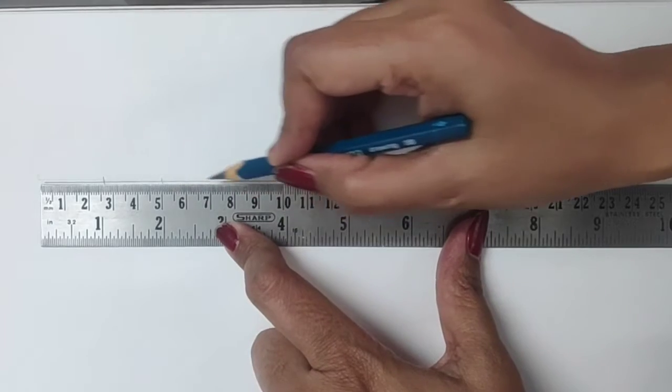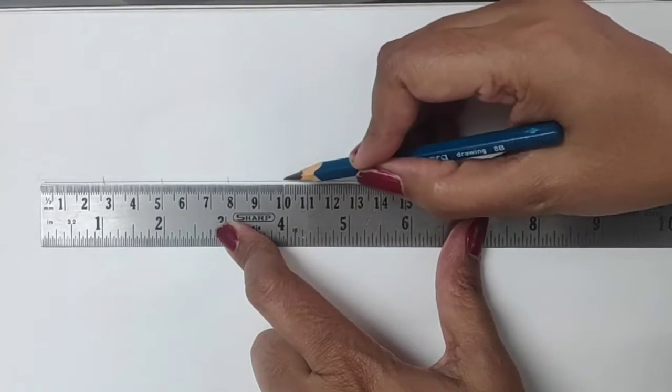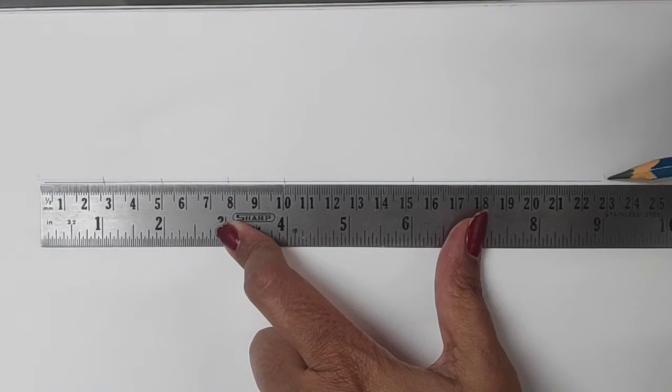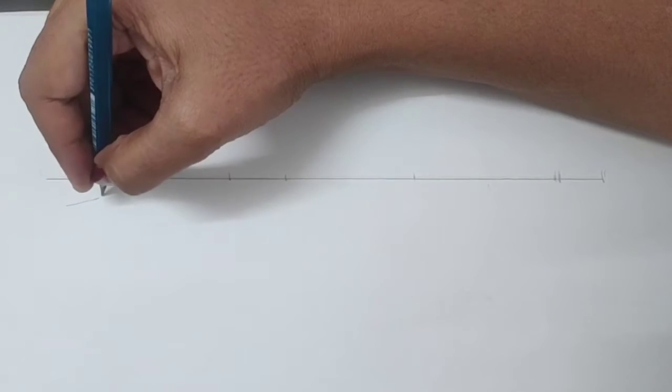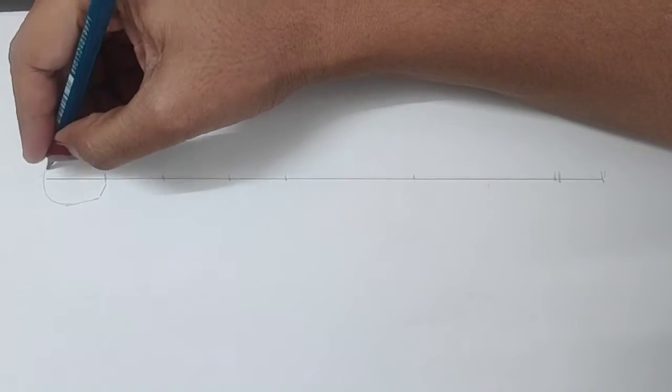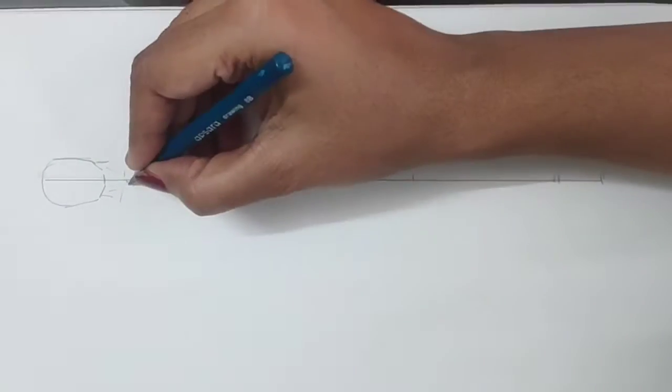What I've done is I've marked 1-inch intervals. Zero to one is head, two is the chest, three is the waistline, four is the hip line, six is the knee, eight and a quarter is the ankle, and nine is the toes. Starting first with zero to one for the head.